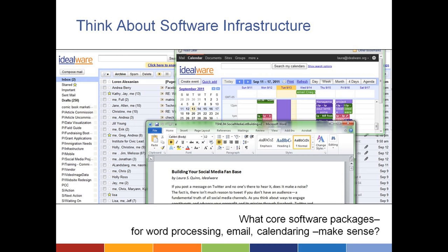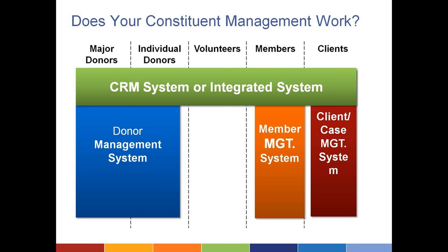Also think about software infrastructure — that includes not just software like the Office Suite or accounting software, but your basic operating system. Is your operating system up to date and a current supported version? How many different versions exist in your organization? Do you have security and antivirus software running on every machine? How standardized are things? Are they meeting your needs? Is everyone trained to use them?